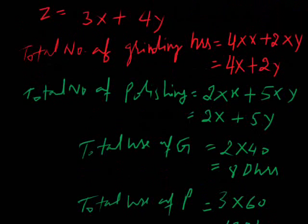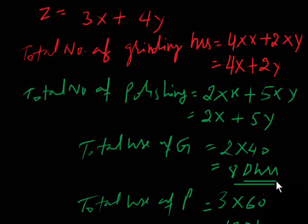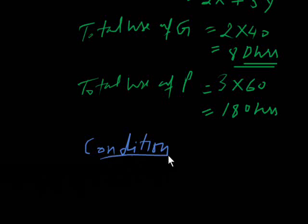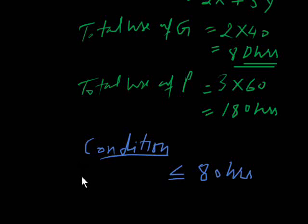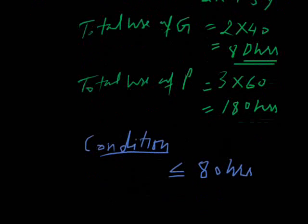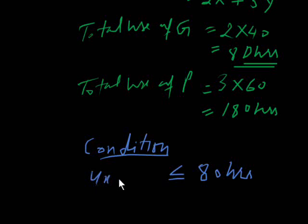Our total number of grinding hours must be less than or equal to 80 hours — this is our constraint equation. We can use the grinder for 80 hours, so for model 1 and model 2: 4X plus 2Y must be less than or equal to 80 hours.